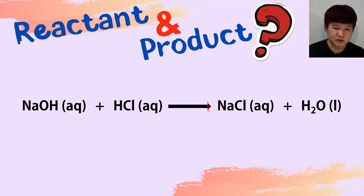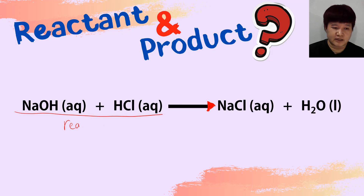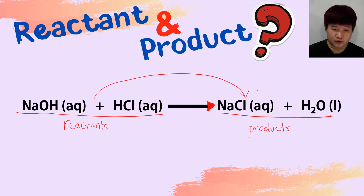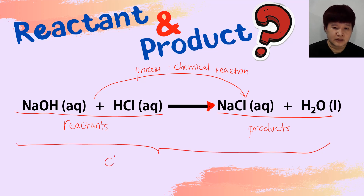To identify the reactant and product, it is important to look at your arrow. The arrow is moving from left to right, therefore anything before the arrow will be called reactants — those compounds, molecules, or atoms that we use for the reaction to happen. Everything after the arrow is what we call products. Products are formed by the reactants. The process of reactants changing to products is what we call a chemical reaction, and when you write it out like this, that is what we call a chemical equation.